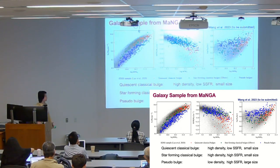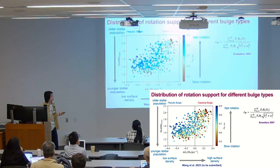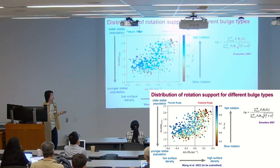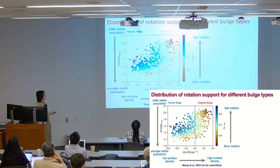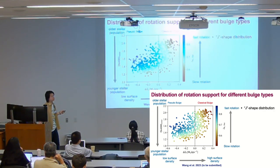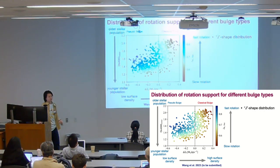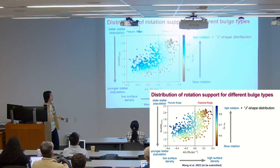For kinematics, we calculate a parameter called lambda — a normalized indicator of galaxy rotation support. Lambda equals zero means totally random-motion dominated, and lambda equals one means totally rotation dominated. We color our galaxies in this plot by lambda and smooth it with an algorithm, and we see a very beautiful G-shaped pattern. Pseudobulge galaxies on the left are mainly blue points — high lambda — and galaxies on the right are mainly red points, consistent with our understanding that pseudobulges are dynamically cool and classical bulges are dynamically hot.